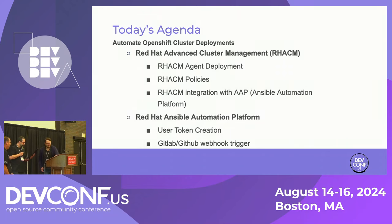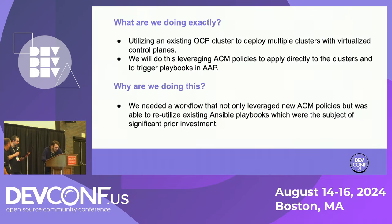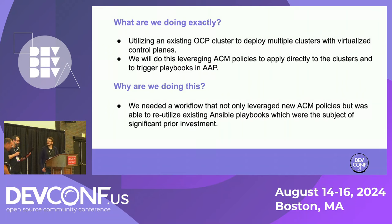At the same time, we will also be taking a close look at how we employ AAP to create user tokens and manage GitLab webhook triggers. So to bring it all together, what exactly are we doing? We're going to take an existing cluster running ACM and use it along with AAP to deploy any number of additional clusters with a virtualized control plane.